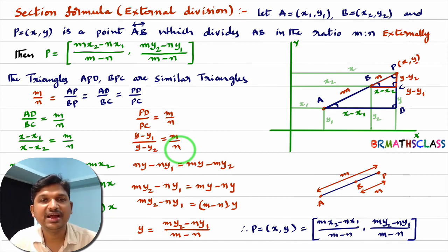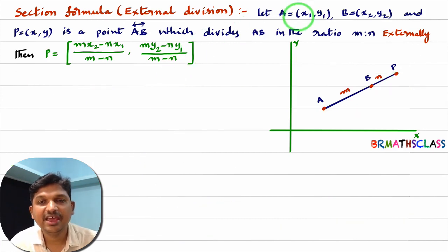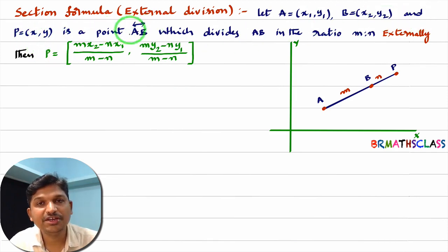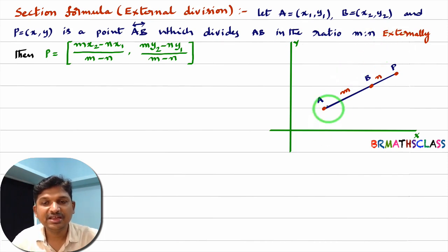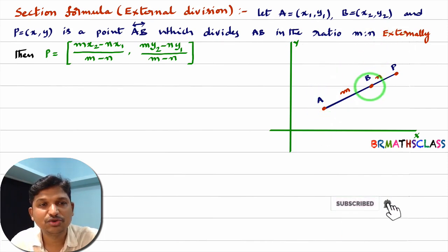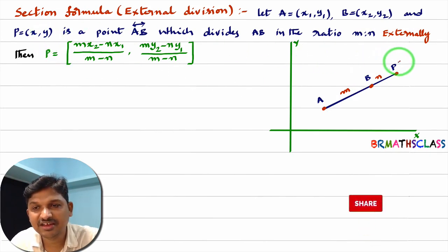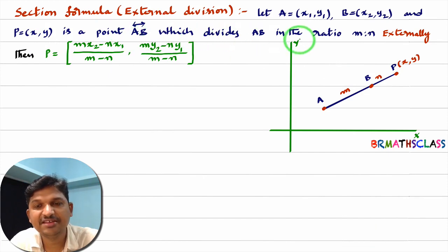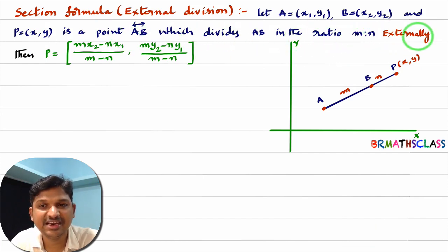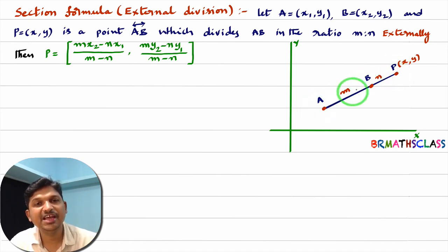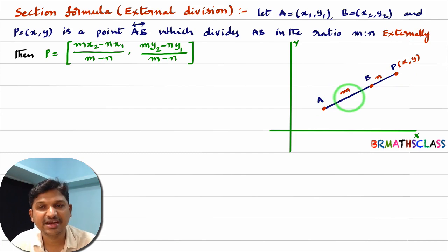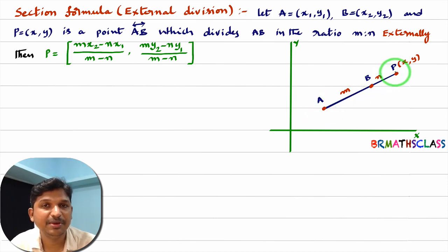First we will try to understand this statement. You see here A is (x1, y1), B is (x2, y2), and P of (x, y) is a point on the line AB which divides AB in the ratio M:N externally. If P is in between A and B, then we say that P divides AB internally. Here P is not in between A and B, but P is on the line AB, so we say that P divides AB externally in the ratio M:N.